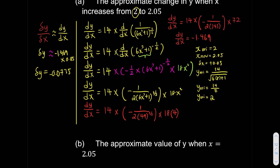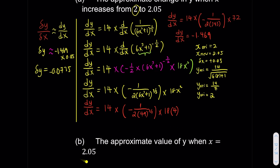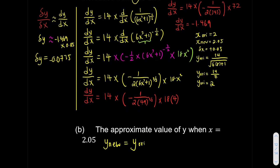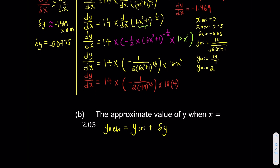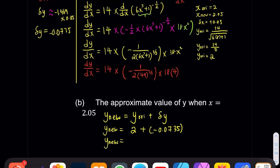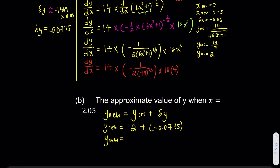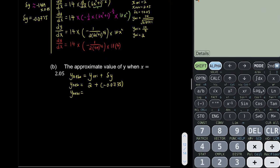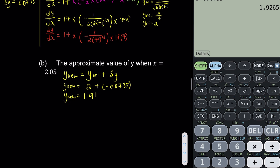Now for part (b), they say find the approximate value of y when x is equal to 2.05. They want the new y. The new y is equivalent to the original y plus the small change in y. So new y equals 2 plus negative 0.0735. Using the calculator: 2 minus 0.0735 is equivalent to 1.927. And that will be the final answer.